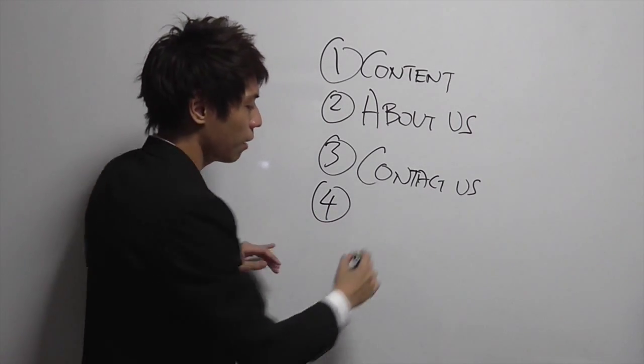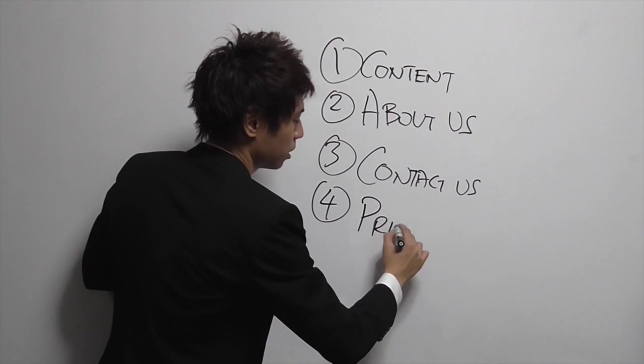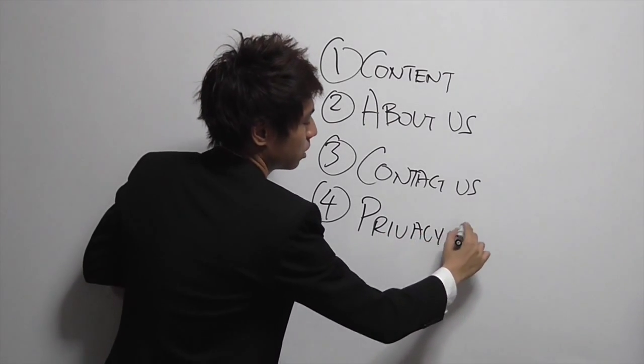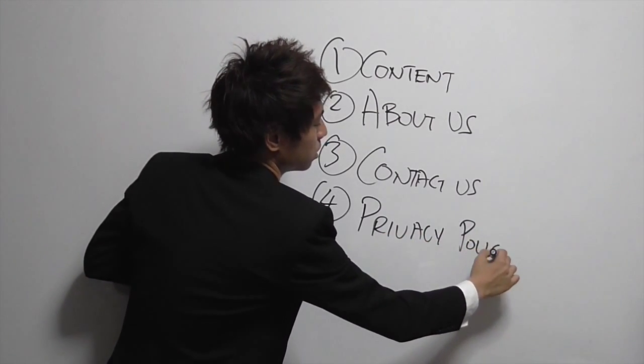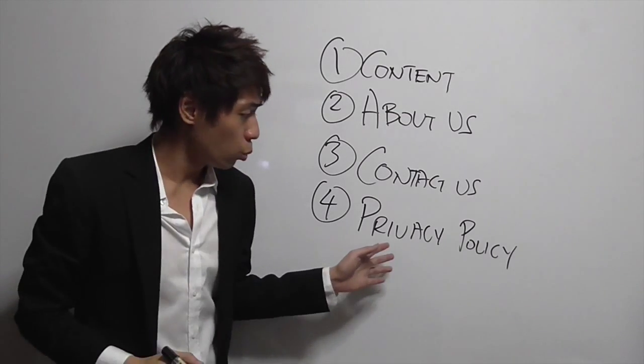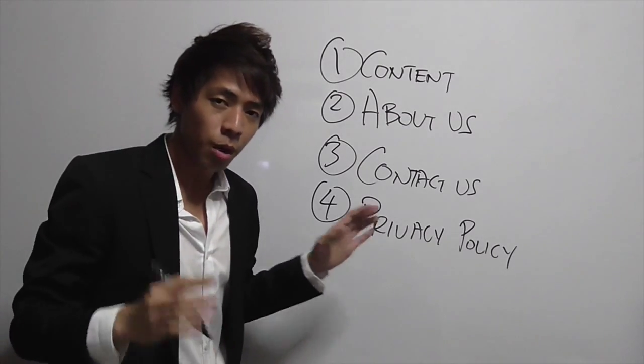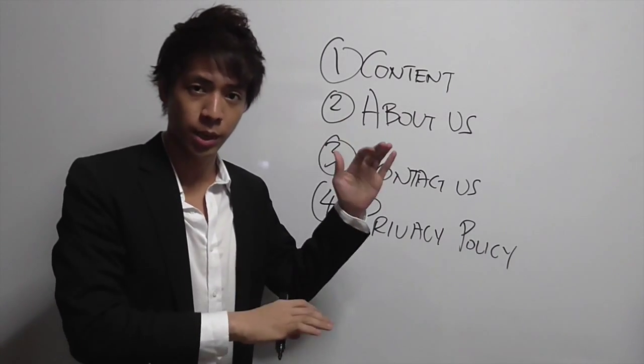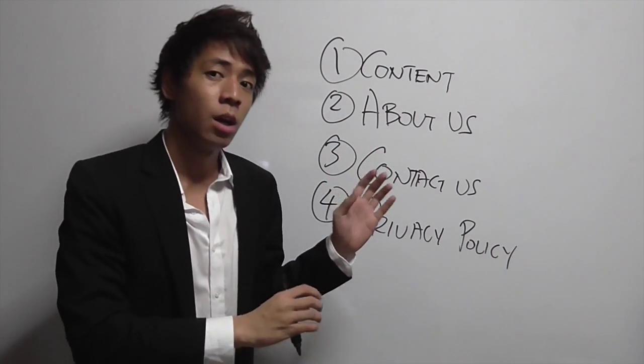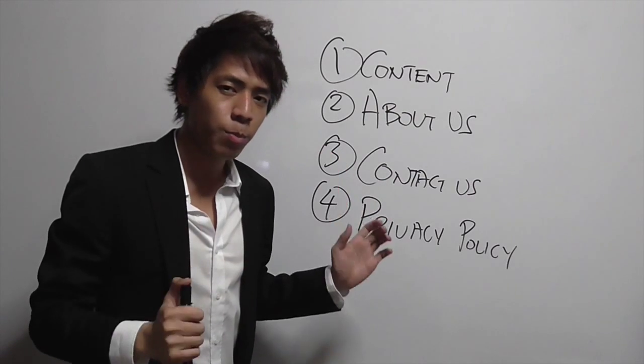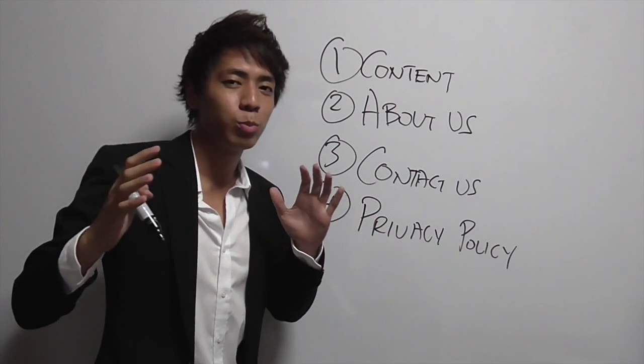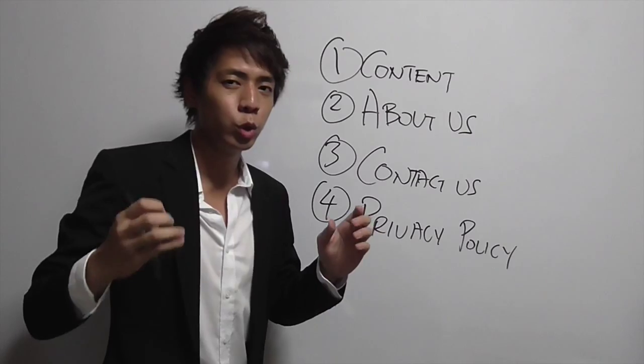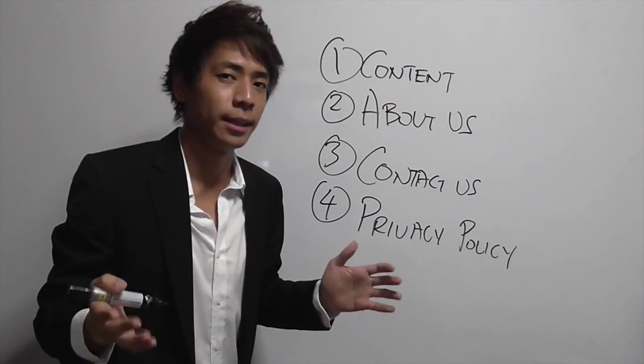The fourth one is actually having a Privacy Policy. So what is a Privacy Policy? Privacy Policy is like terms and conditions that you have on your website, on one of your pages. It tells people how you are going to use their data, whether you are collecting any data on your website.